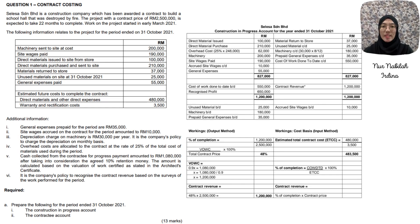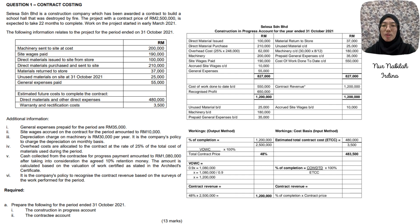Next, we need to apportion the direct expenses accordingly. There are two expenses in this construction in progress account: sub-wages paid, which amounted to RM190,000, and general expenses paid, which amounted to RM55,000. Both expenses should be placed on the debit side. Based on additional information 1 and 2, the prepaid general expenses of RM35,000 need to be placed on the credit side, and then brought down to the debit side on 1 November 2021. Meanwhile, the accrued sub-wages on the contract are RM10,000, placed on the debit side, and then brought down to the credit side on 1 November 2021.